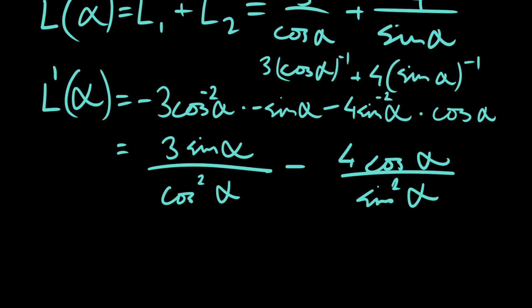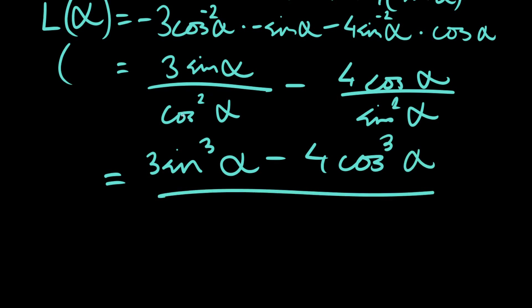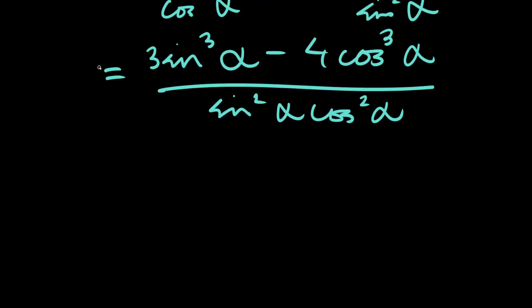This is our derivative, so let's simplify this and see if we can find alpha by setting it to zero later. If we multiply this side by sine squared alpha and the other side by cosine squared alpha, we'll get 3 sine cubed alpha minus 4 cosine cubed alpha divided by sine squared alpha cosine squared alpha. So, we're going to let this equal zero, because what we're trying to find is where the slope is zero, to try and find if we have any local maximums.